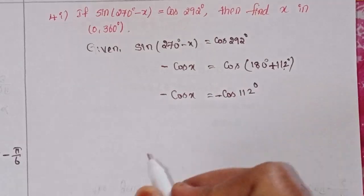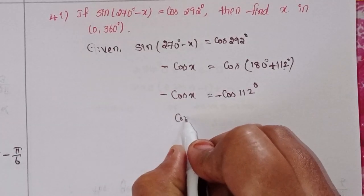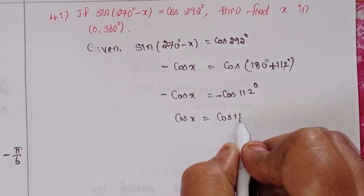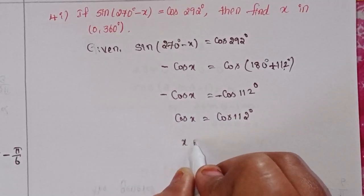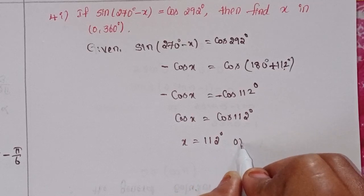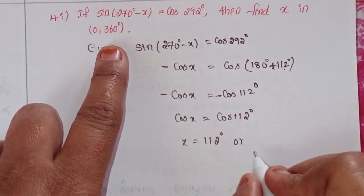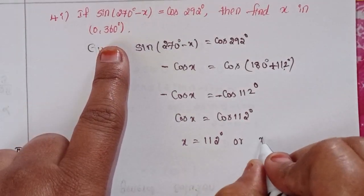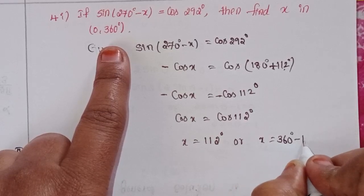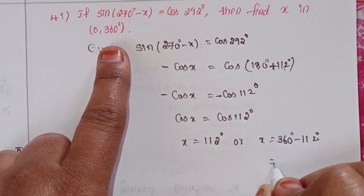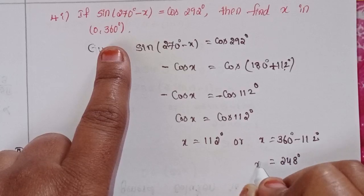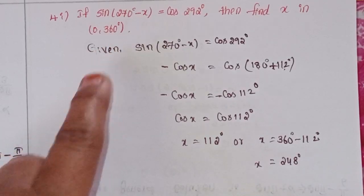So -cos x = -cos(112°), which gives cos x = cos(112°). Therefore x = 112°. Within the given boundary, or x = 360° - 112° = 248°. So the solutions are x = 112° and x = 248°.